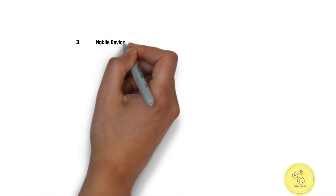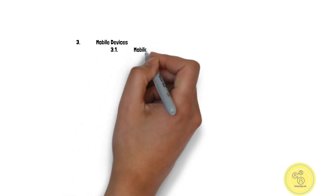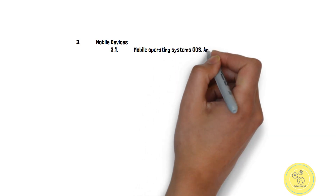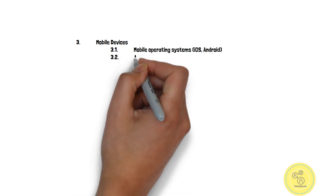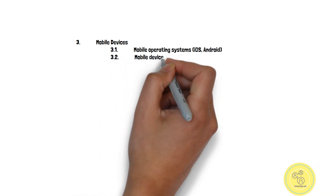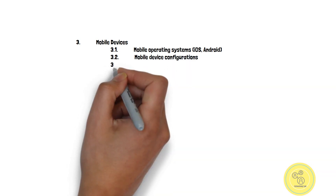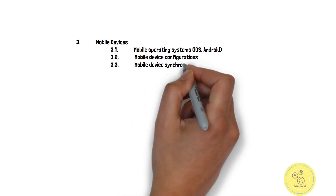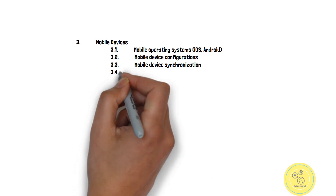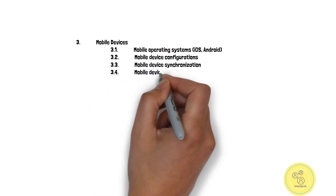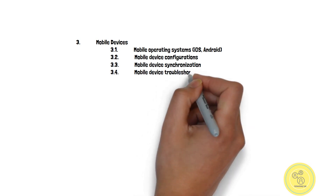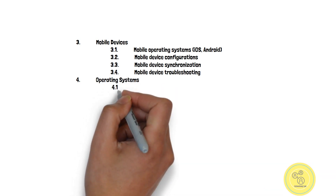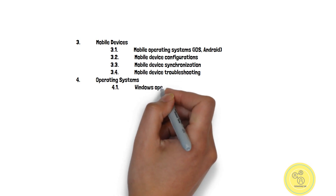We must cover mobile devices, mobile network, wireless devices, and wireless operating systems. The mobile device configuration section covers how to configure devices, IoT devices, and mobile device synchronization.